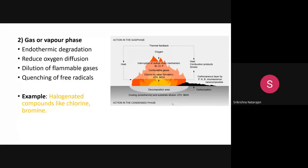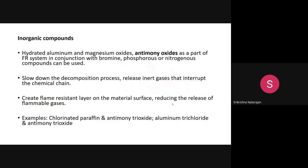We also discussed N-P synergism — how nitrogen and phosphorus when combined produce synergistic flame retardancy. Then we discussed the gas or vapor phase mechanism and its examples like chlorine, bromine, and other halogens, and how they provide flame retardancy. That's what we covered yesterday; today we will continue our discussion on flame retardant chemistry.